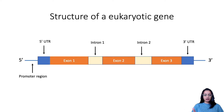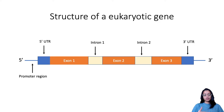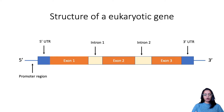We also have untranslated regions on either end: the 5' untranslated region towards the 5' end, and the 3' untranslated region towards the 3' end. We also have a promoter region that is upstream, where various proteins bind — like RNA polymerase and transcription factors — to initiate transcription and convert this gene into an mRNA, which can eventually be converted into a protein.